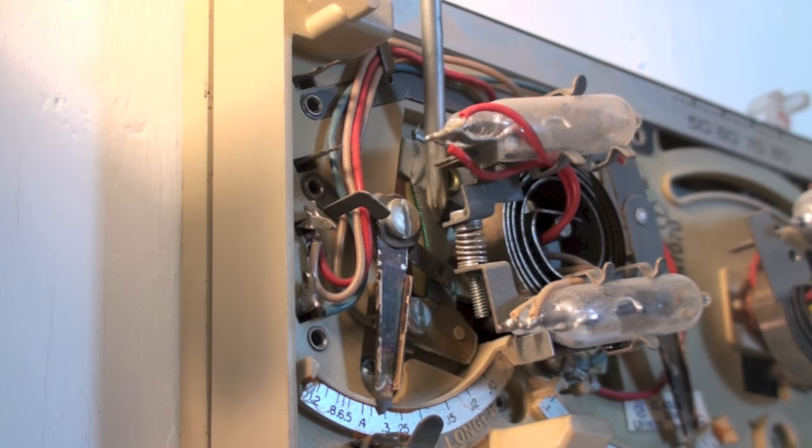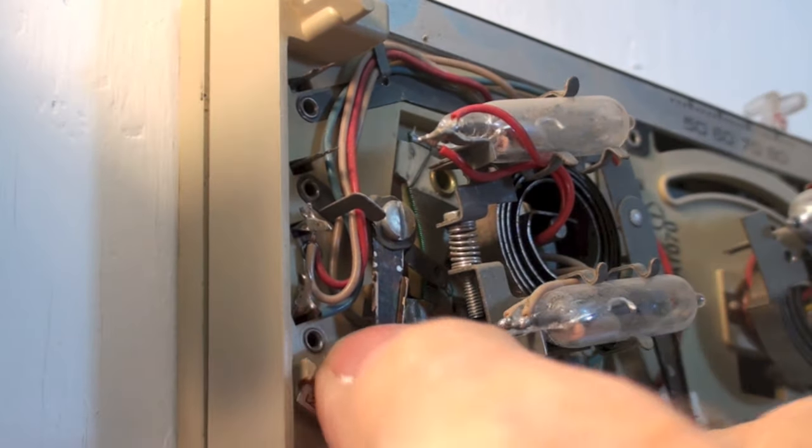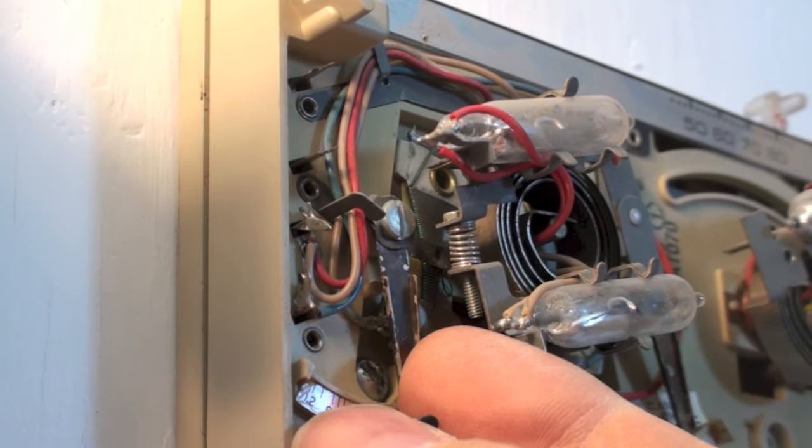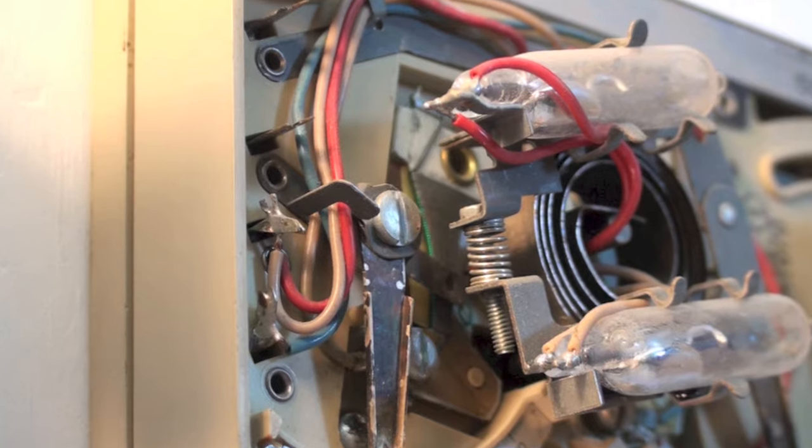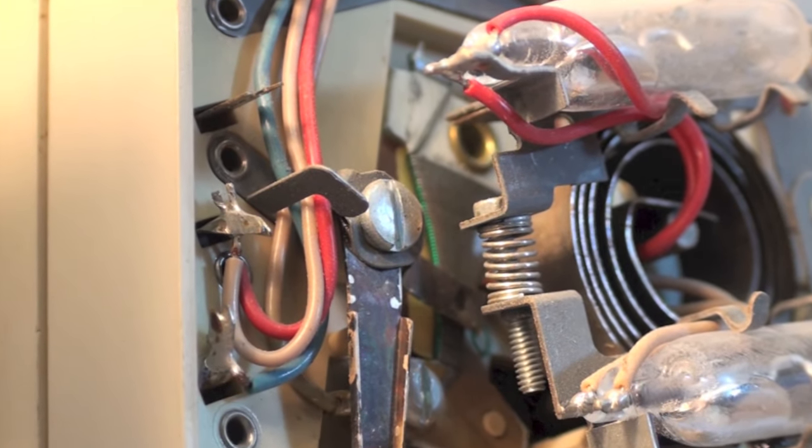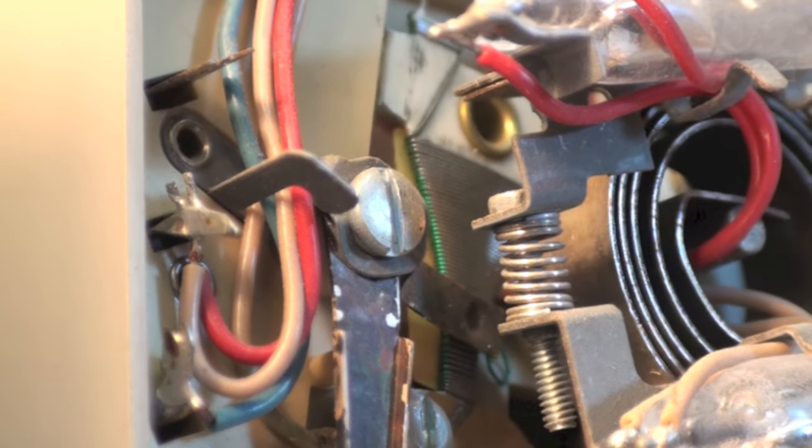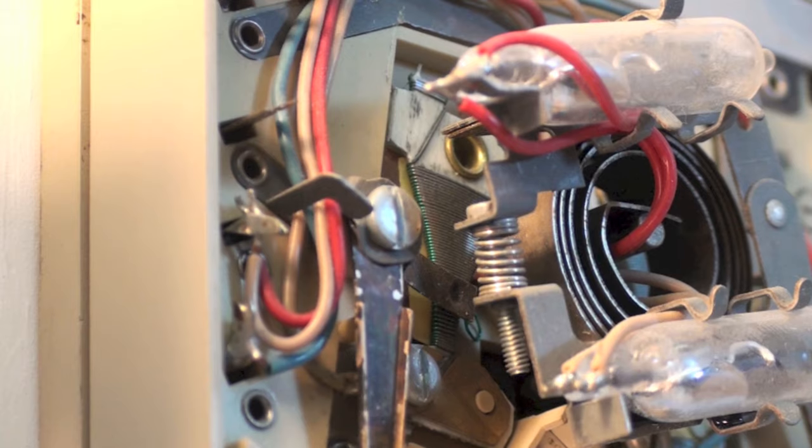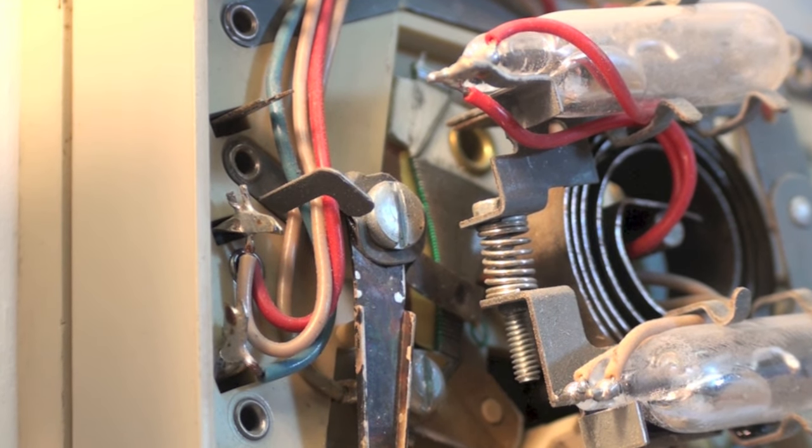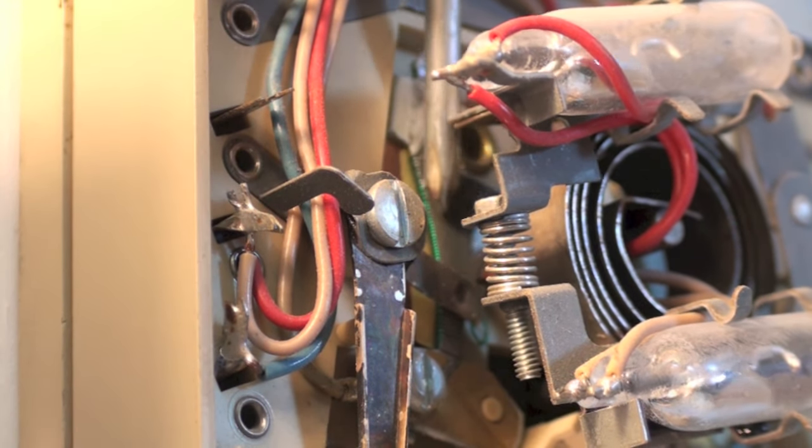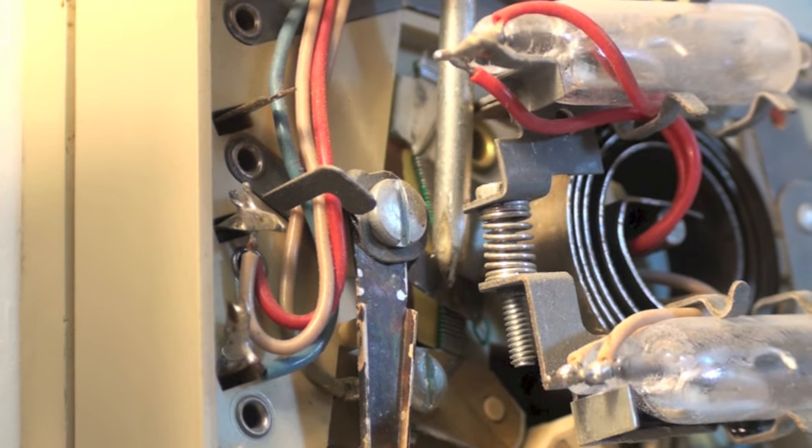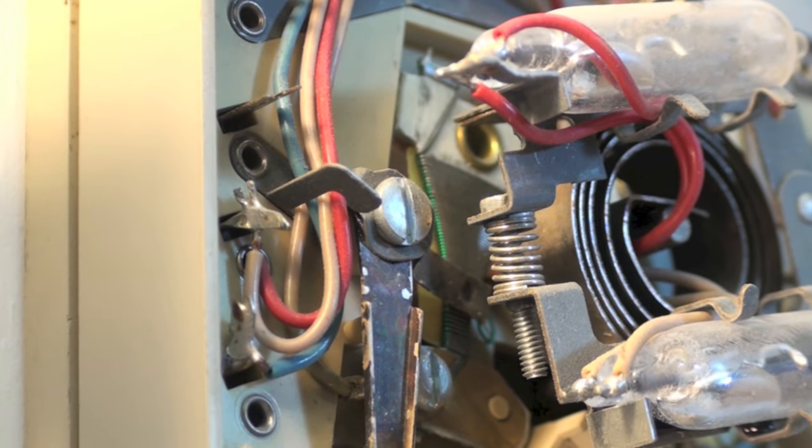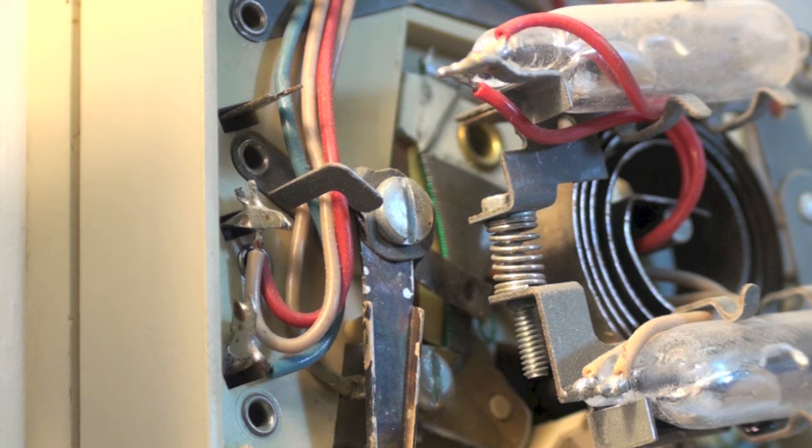And of course as you move this back and forth it changes the position of the bar on it. Okay, right in there. And there's your little dial to move it. Those are both adjustable anticipators.